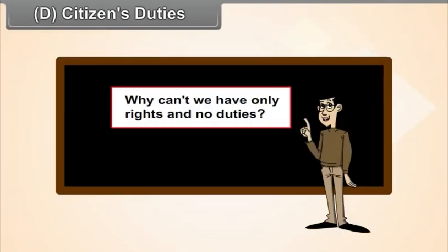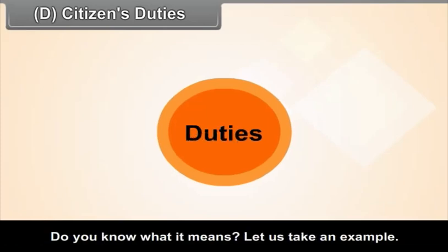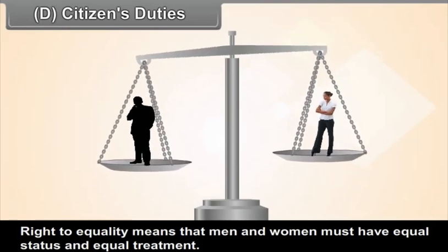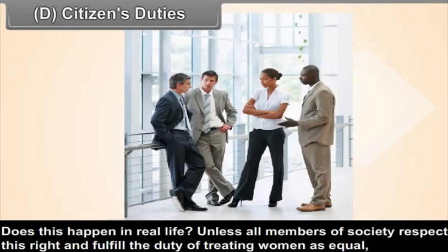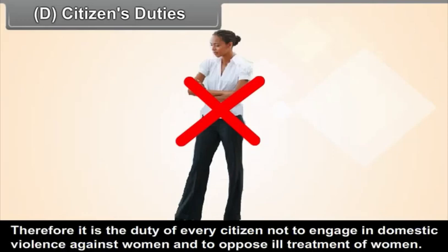Citizens have duties — why can't we have only rights and no duties? It is often said that rights and duties are two sides of the same coin. Let us take an example: the right to equality means that men and women must have equal status and equal treatment. But does this happen in real life? Unless all members of society respect this right and fulfill the duty of treating women as equal, this right will never fully come into being.